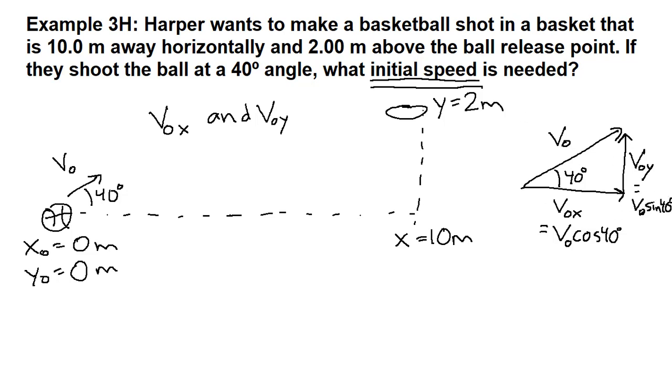For the x stuff, we have V0x, we have the final x, and we have the initial x. We can still write down the xt equation: x equals x naught plus V0x times t. Because we have 10 equals 0 plus V0 cosine 40 degrees times t.